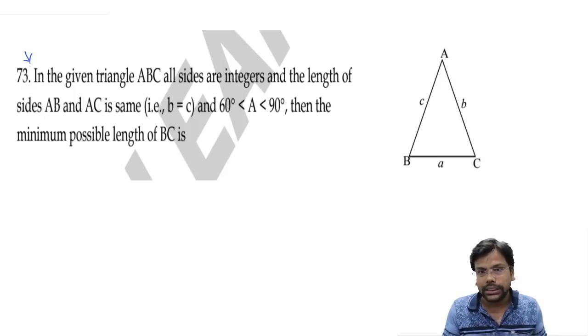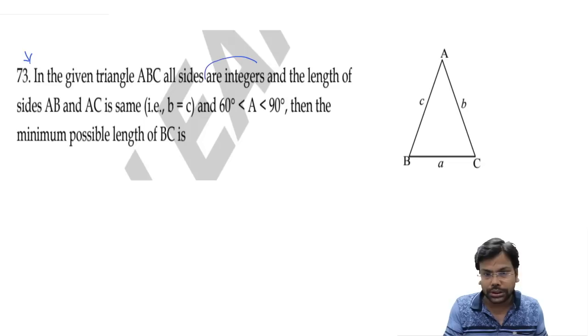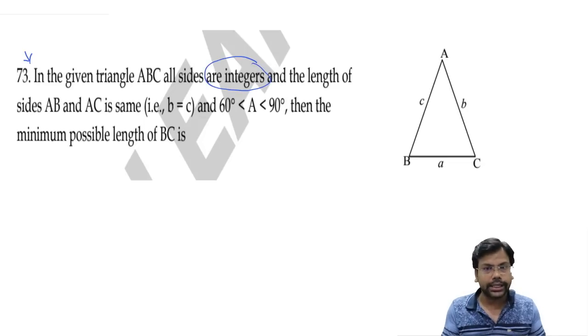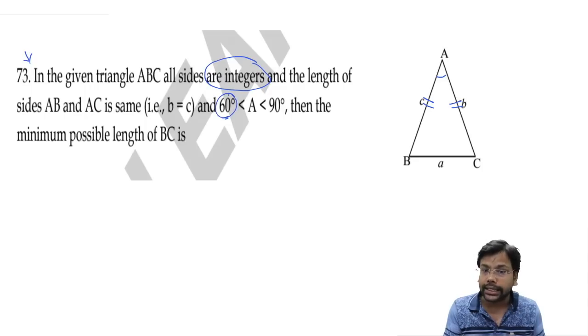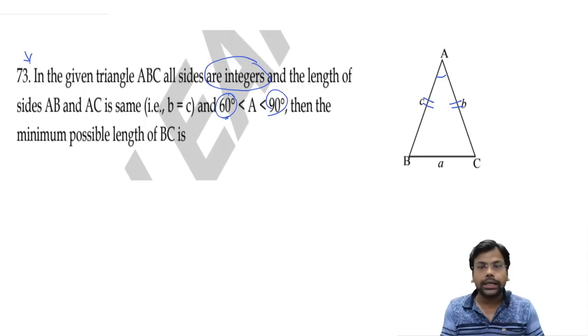In the given triangle ABC, all sides are integers - this is the most important case. Length of AB and AC is same, that means isosceles triangle. And angle A is between 60 to 90 degrees, and not equal to 60 or 90. This is clear. So what is the minimum possible value of BC?